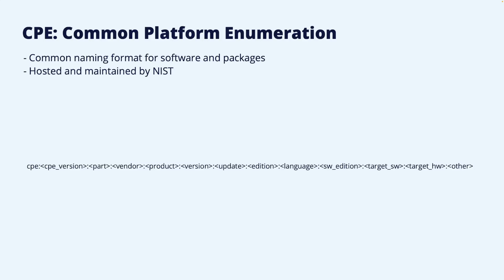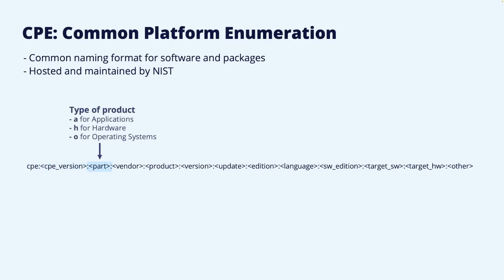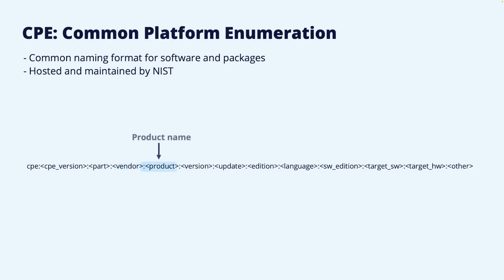The CPE string consists of 13 parts, though only a few of them are used in the normal case. The first part just identifies the string as a CPE, and the second part identifies the CPE version that the string is based on. The next part is the type of product, which can be either A for applications, H for hardware, or O for operating systems. Then the manufacturer of the product is identified, followed by the name of the product. The next part is the product version, followed by the update field, which can be used if a version has a service pack or to identify a minor version.